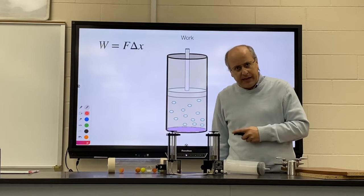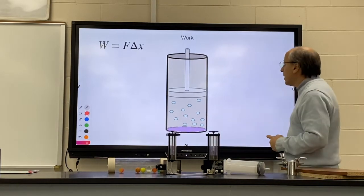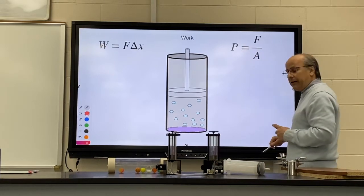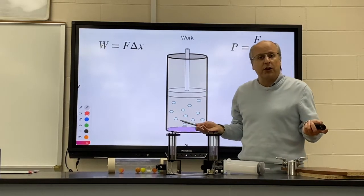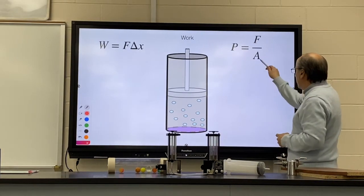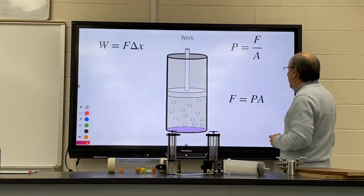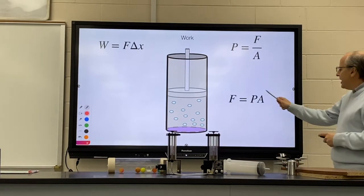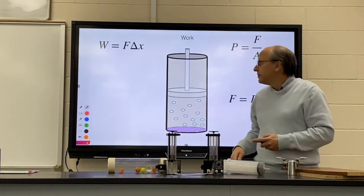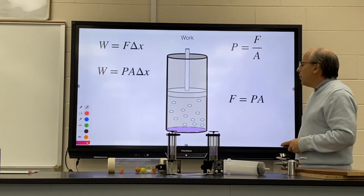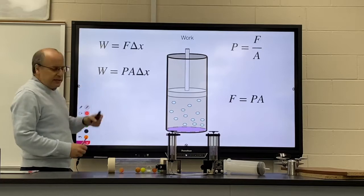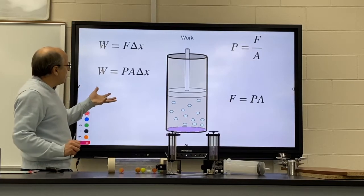We're going to modify it through a very simple process. You'll recall that pressure is equal to force over area: P = F/A. We learned that when we were talking about fluids. We take this equation and solve it for force, so we move the area to the other side: F = PA. We then take this force and put it into the work equation that we had last year. We now get pressure times area times delta x is equal to work: W = PA∆x.